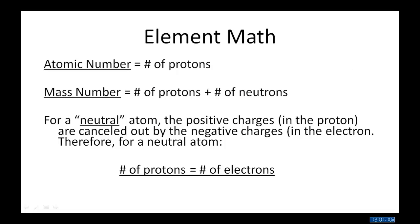Here's some beginning element math. You've seen these before. The atomic number, the number of protons. Mass number, number of protons plus number of neutrons. For a neutral atom, that's where the positive charges in the proton are cancelled out by the negative charges in the electrons. Therefore, for a neutral atom, the number of protons equals the number of electrons.